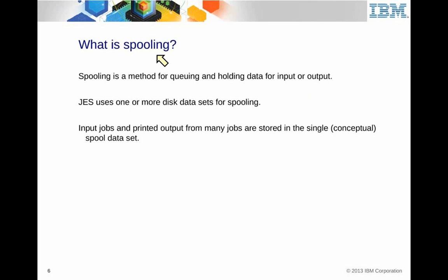JES has something called a spool. The spool is actually a special type of dataset formatted by JES, and JES knows how to deal with it. To you, it just looks like a sequential dataset, but if you try to view it, it doesn't make any sense. It's a special disk dataset called a spool. The spool-formatted disk holds the input queue, output queue, and execution queue information. JES uses one or more disk datasets for the spool dataset — we call this spooling for managing input and output.